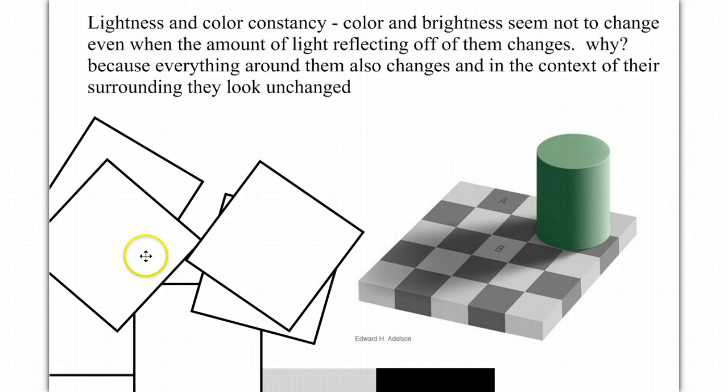Let's look at the idea of lightness and color constancy. The idea that color and brightness seem not to change even when the amount of light reflecting off them changes. Why? If you have an apple indoors amongst a bunch of other fruit, and you took that basket of fruit outside, would the apple look any more red? Or would it look the same? Well, because everything around them also changes, in the context of the surroundings, they look unchanged. We have a lightness and color constancy.